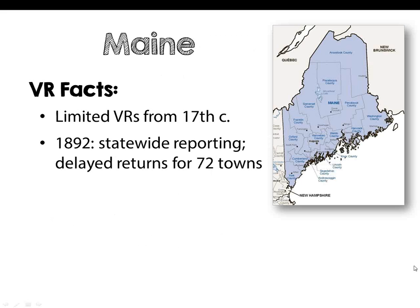We're now going to talk about the great northerly state of Maine. Maine was formed as a district from Massachusetts before becoming a state. Maine has very early settlements in the 17th century, and in some cases records are preserved from these very early communities. In 1892, the state of Maine required that every city and town send a copy of their birth, marriage, and death returns to the capital in Augusta. It was also requested to have earlier records copied and returned to the state as delayed entries, but only from 72 towns.